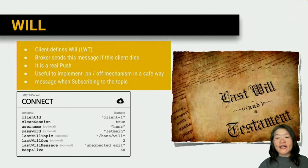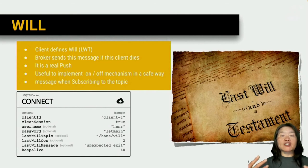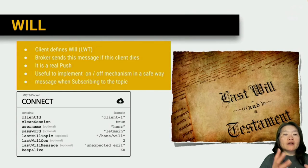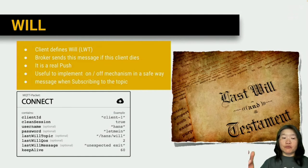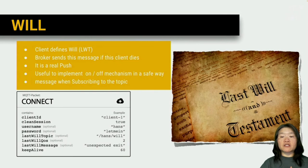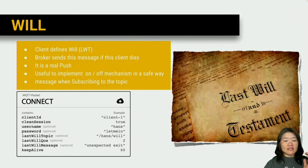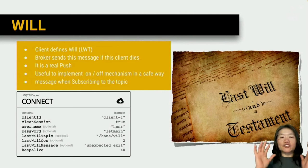The Last Will feature: if a client indicates it wants a last will, it means if the client goes away, the broker — which is always there — will send the last will messages. It's useful for implementing an on/off mechanism in a safe way, basically letting the broker send specific messages on behalf of a disconnected client, guaranteeing message delivery even when the client dies.